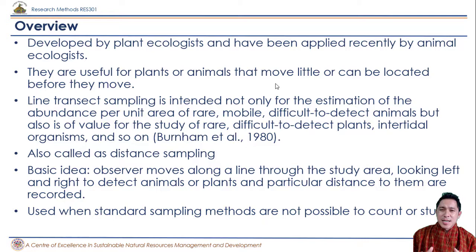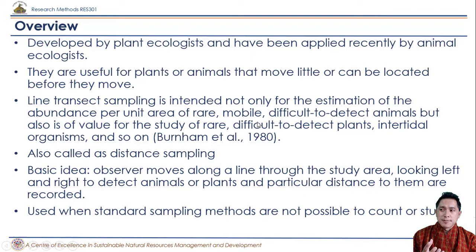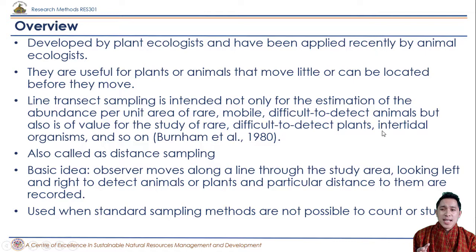Line transect sampling is not only useful for general kinds of animals, but is very useful for very rare, very mobile, and very difficult to detect animals. It is a very good method to estimate the abundance of animals that are rare, cryptic, highly mobile, and difficult to detect. It can also be used for detecting plants that are very rare or difficult to detect, and even in areas with transitions like intertidal organisms or forest transitions.